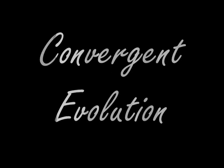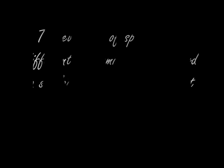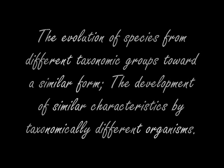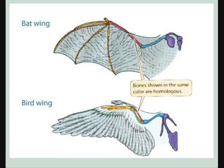Hello, today I'm going to talk about convergent evolution and co-evolution. We'll start with convergent evolution. The dictionary definition of convergent evolution is the evolution of species from different taxonomic groups toward a similar form, or the development of similar characteristics by taxonomically different organisms. In layman's terms, this means that two different organisms acquired similar or identical traits to adapt to a similar or identical environment.